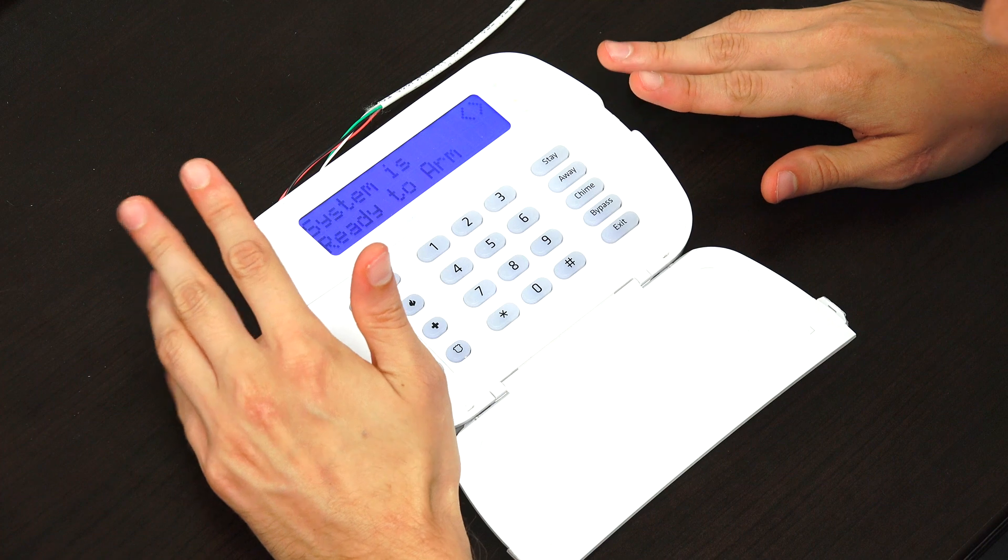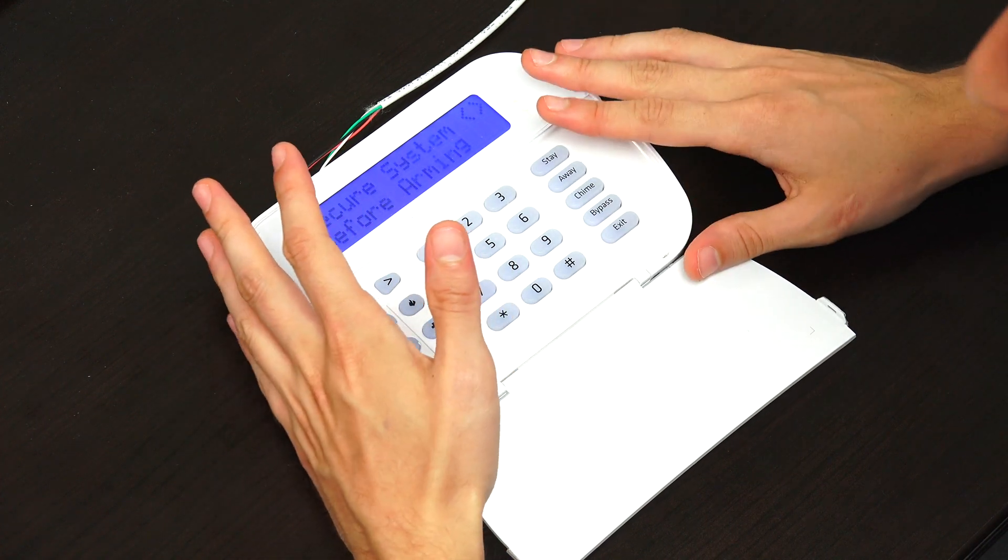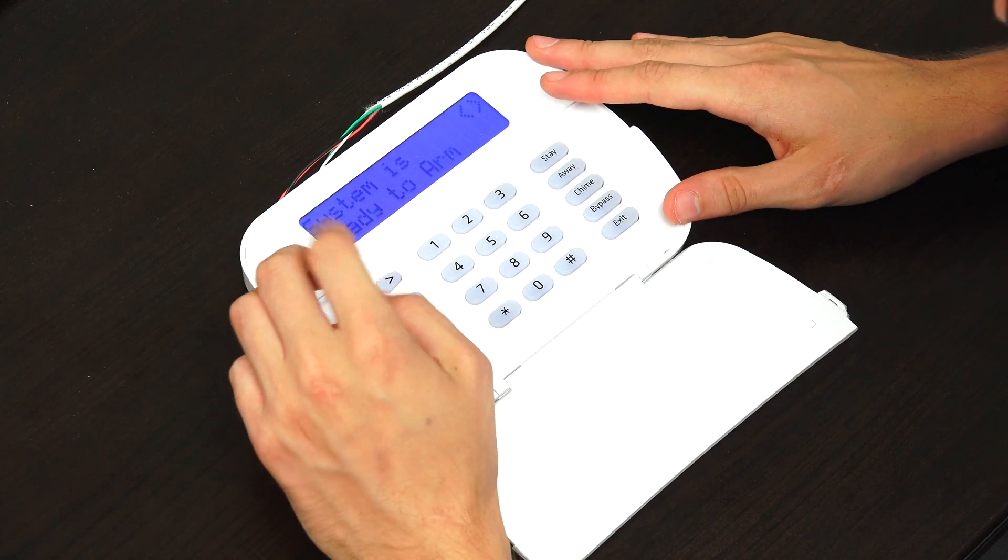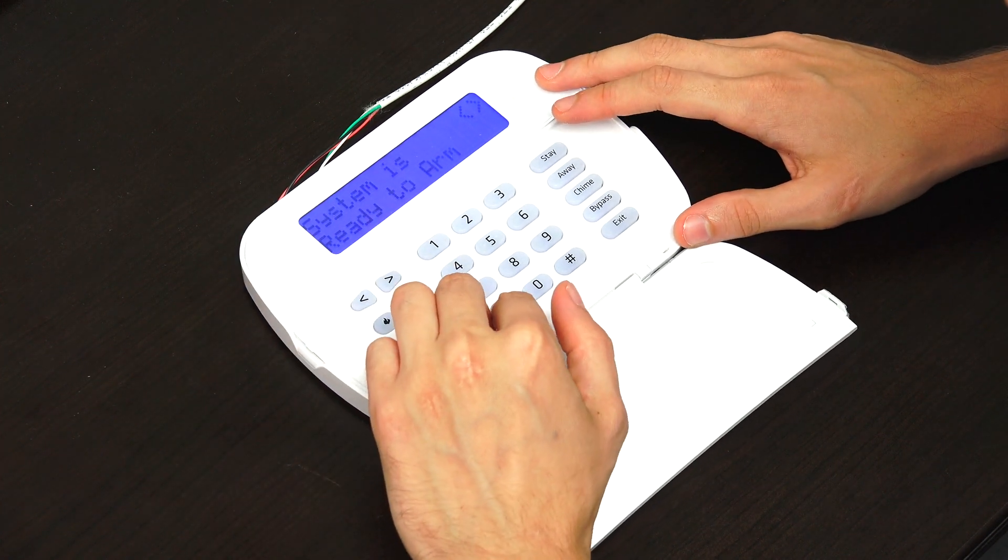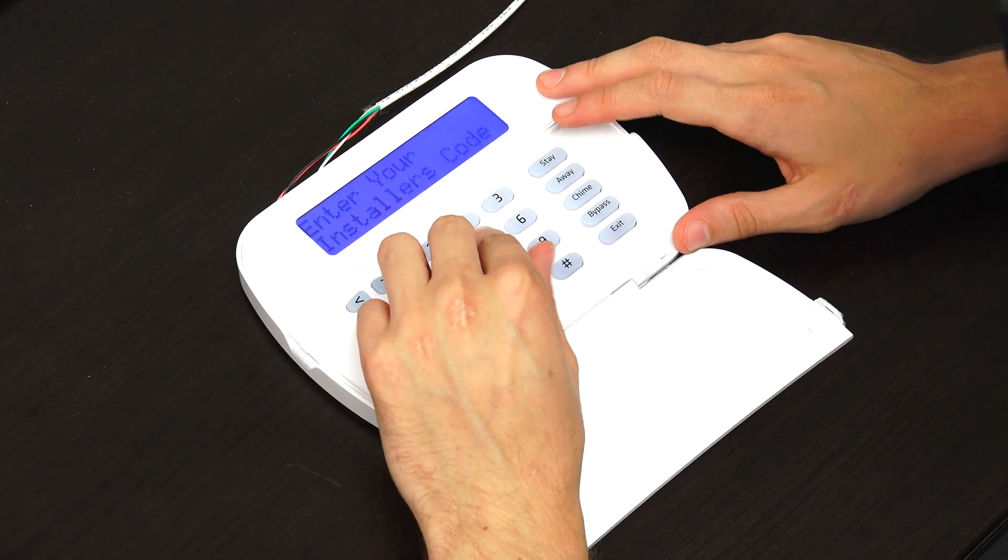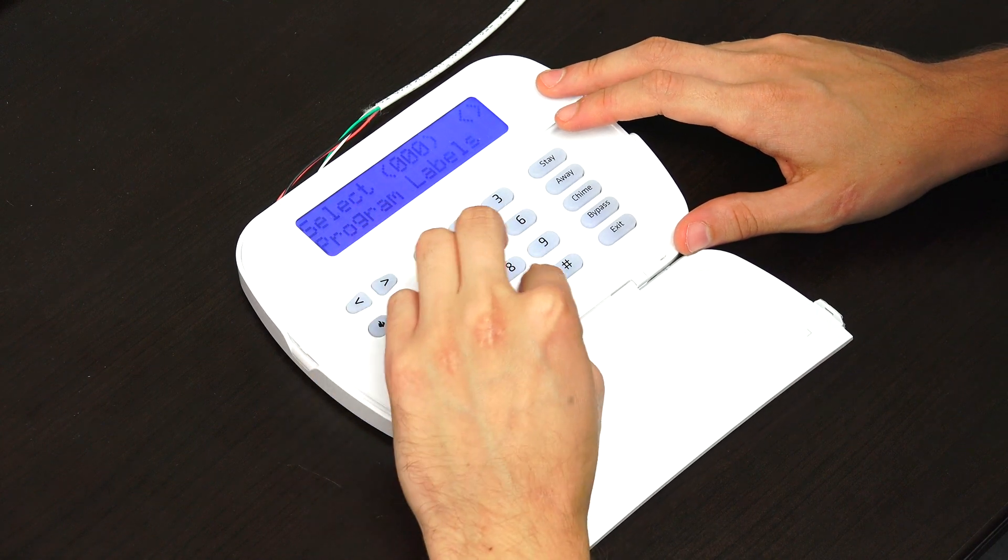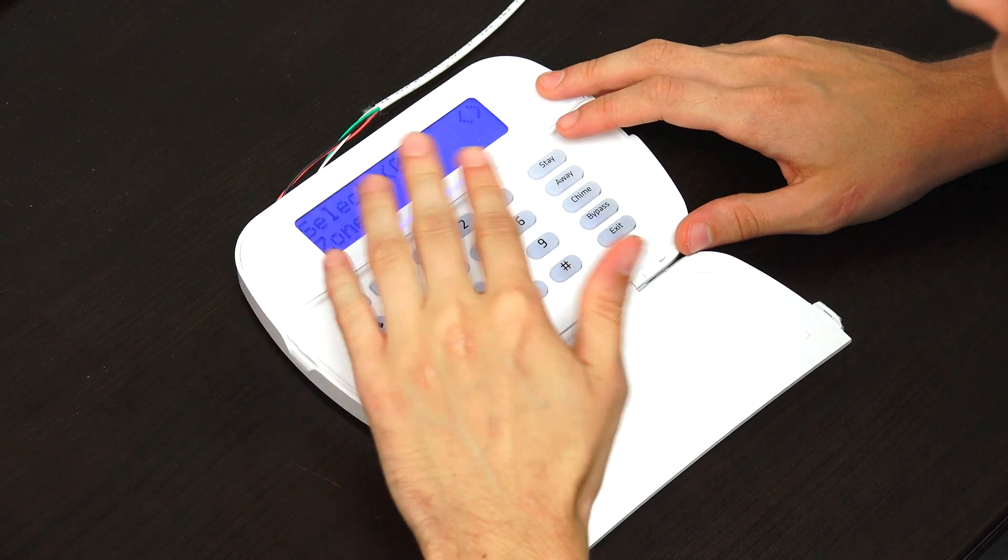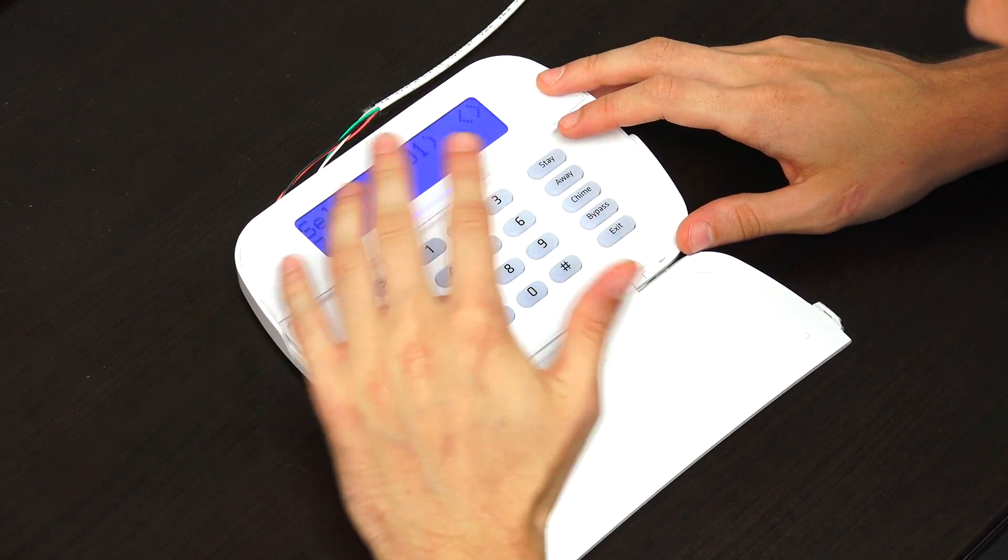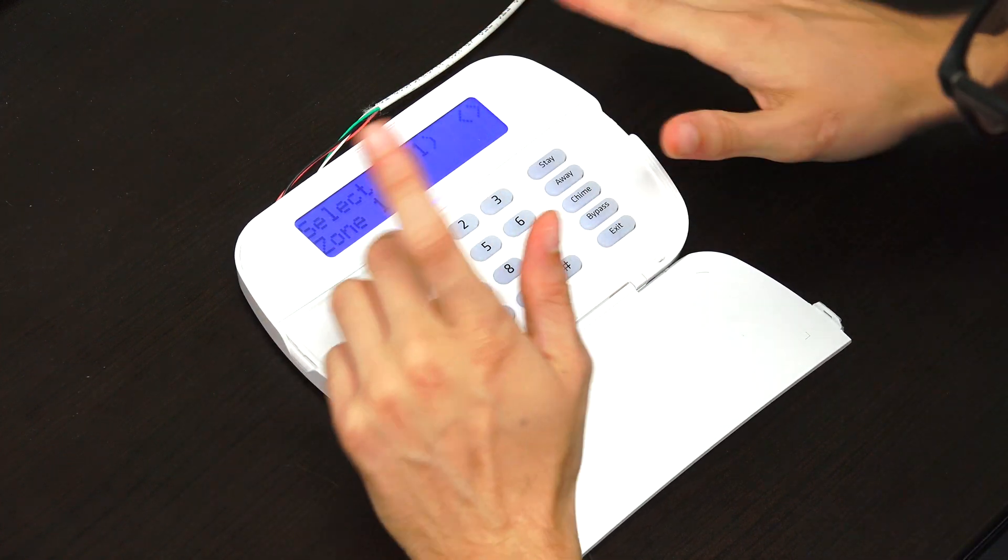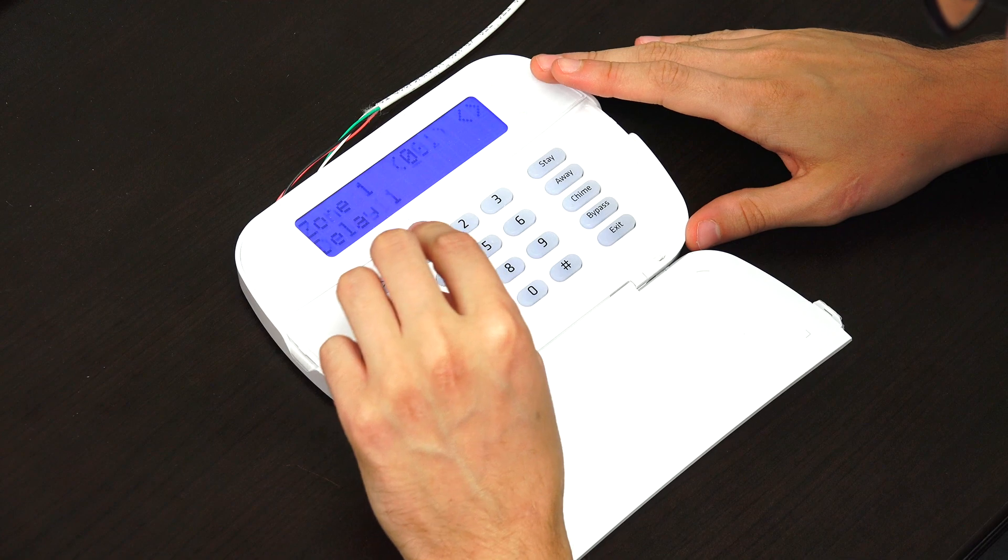So we have our Neo system powered back on. I'm just going to show you the programming that's needed for a new hardwired zone. It's mostly setting the zone definition and assigning any partitions. So first, we're going to enter into programming. That's star 8. It's going to ask us for our installer code, which we have ours at the default of 5555. And then we're going to enter 001 for zone definitions. And then you're going to want to find the three-digit zone number of the one that you're using. We have ours set up at zone number 1. So that's the default one, so we can just press star to confirm.